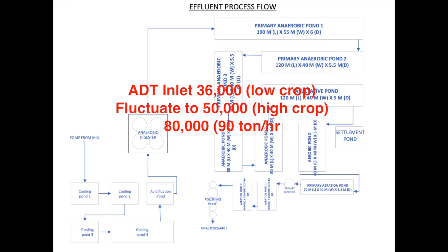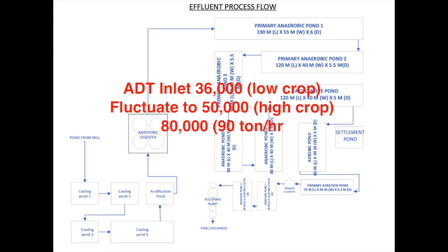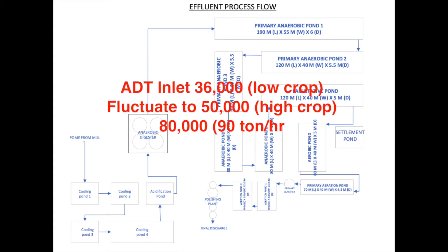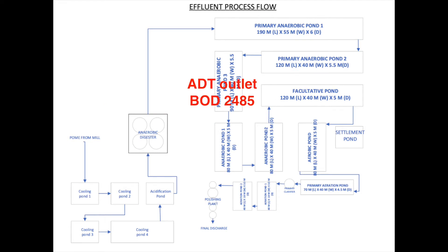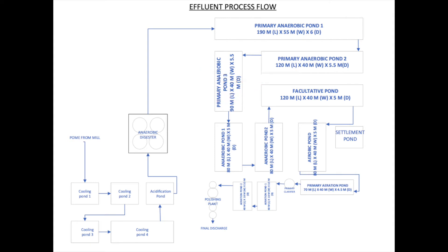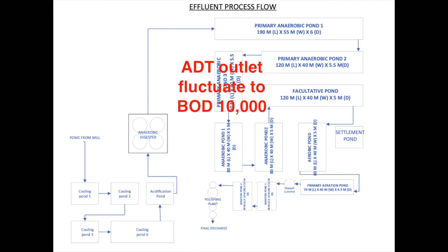With a pending upgrade to 90 tonnes per hour, we can expect the BOD to fluctuate up to the vicinity of 80,000. The ADT outlet BOD was 2,485. Given that the efficiency of the ADT tank is around 80 to 85%, we can expect the ADT outlet BOD to be about 10,000 during a high crop season.